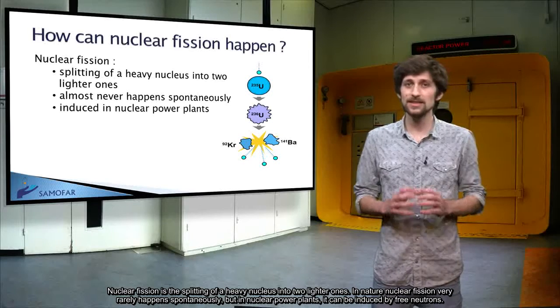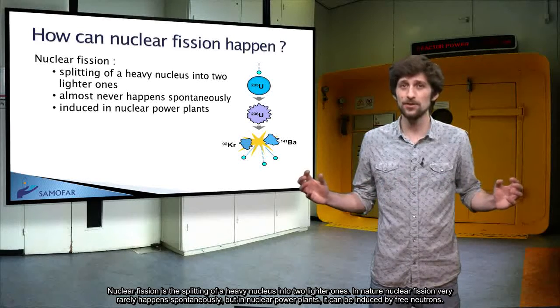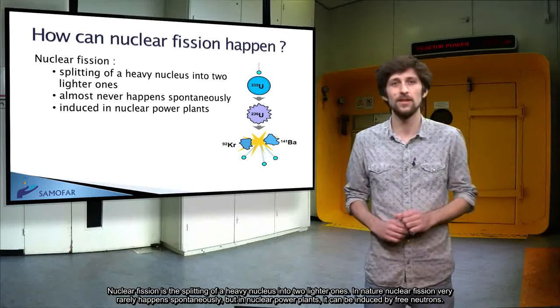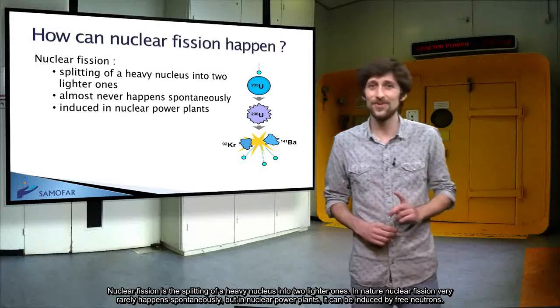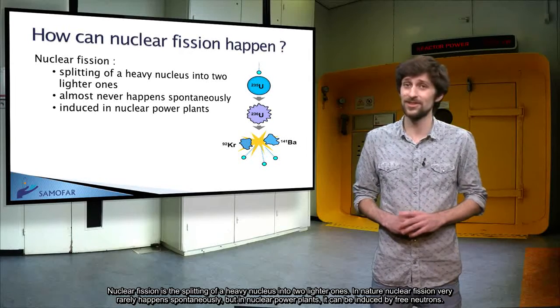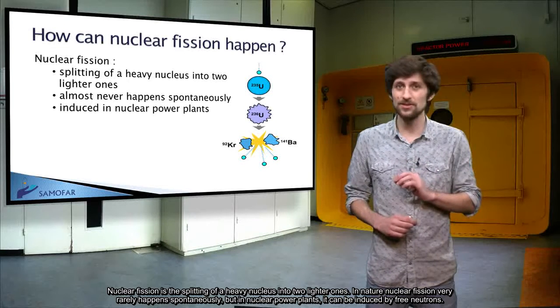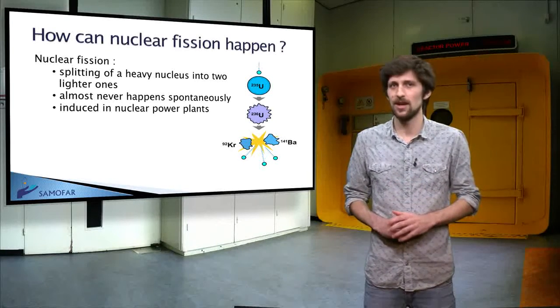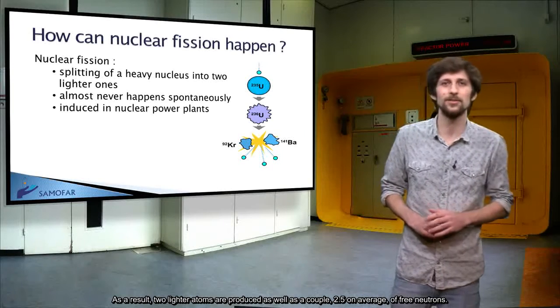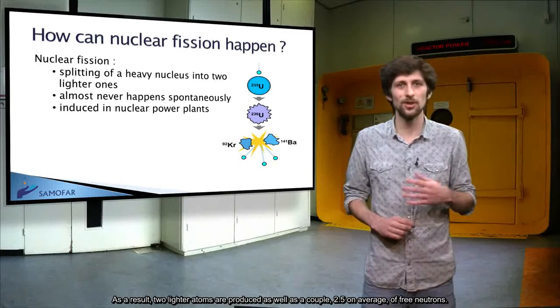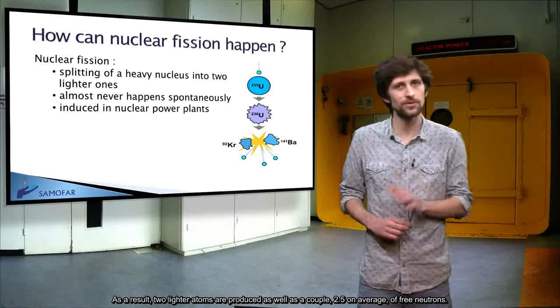Nuclear fission is the splitting of a heavy nucleus into two lighter ones. In nature, nuclear fission very rarely happens spontaneously at least. But in nuclear power plants, it can be induced by free neutrons. As a result, two lighter atoms are produced as well as a couple, 2.5 on average, of free neutrons.